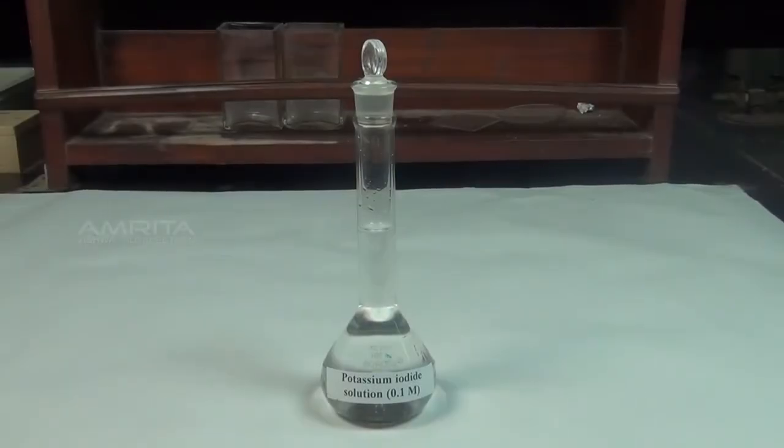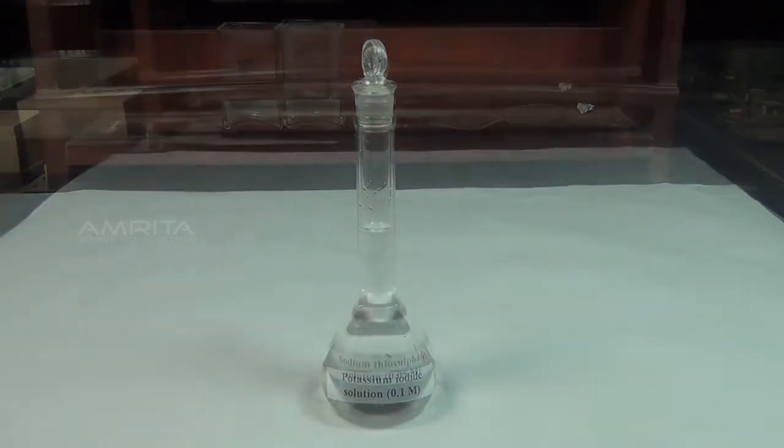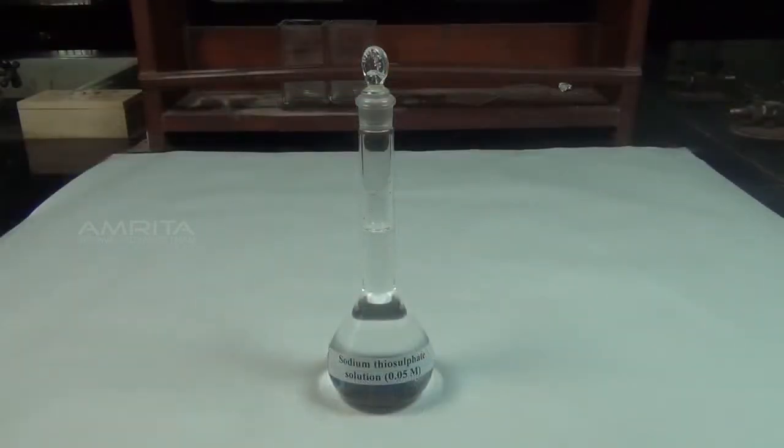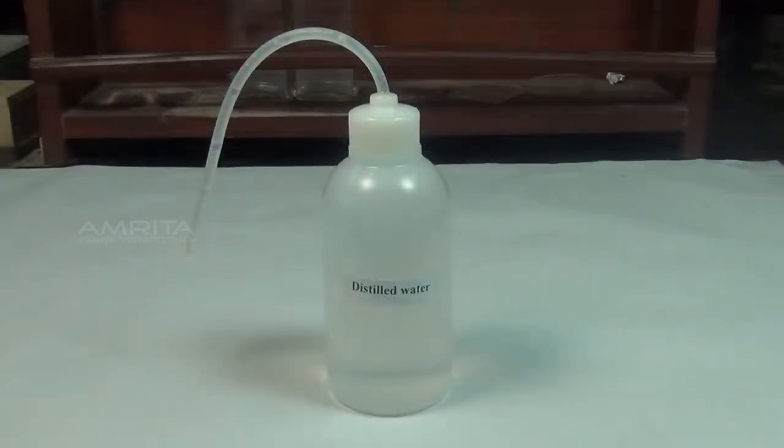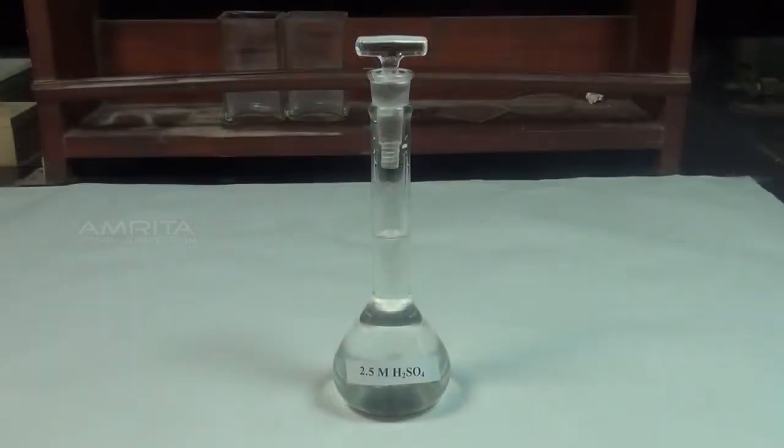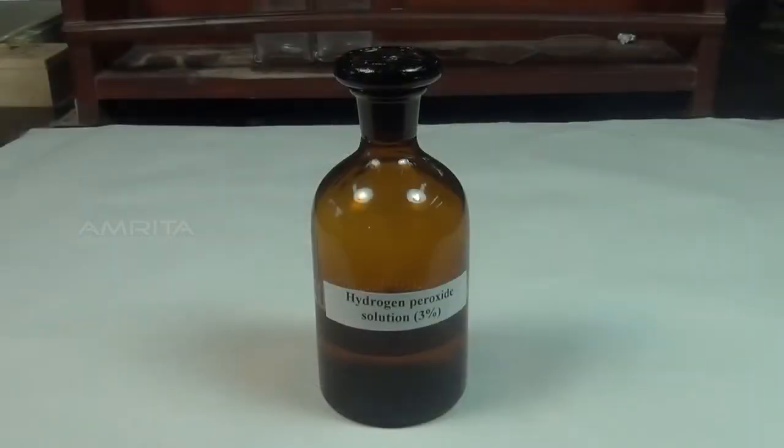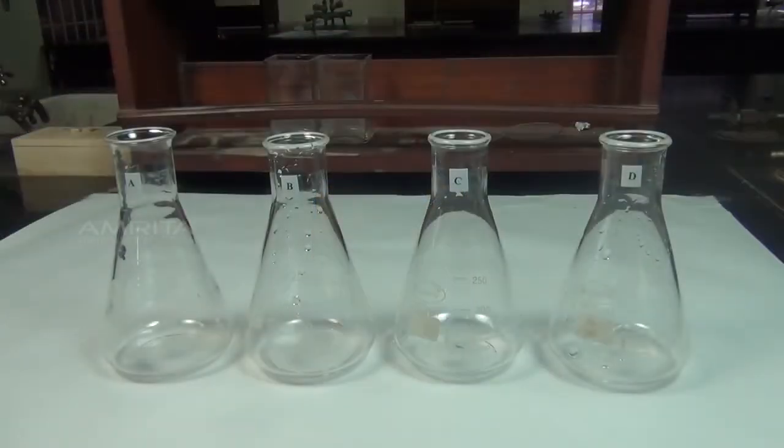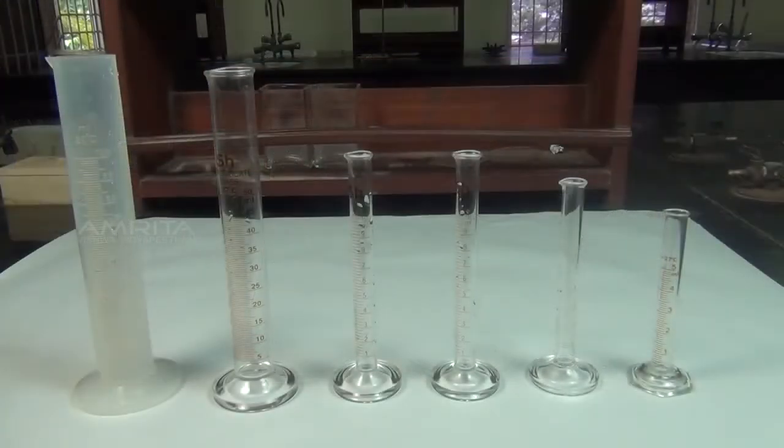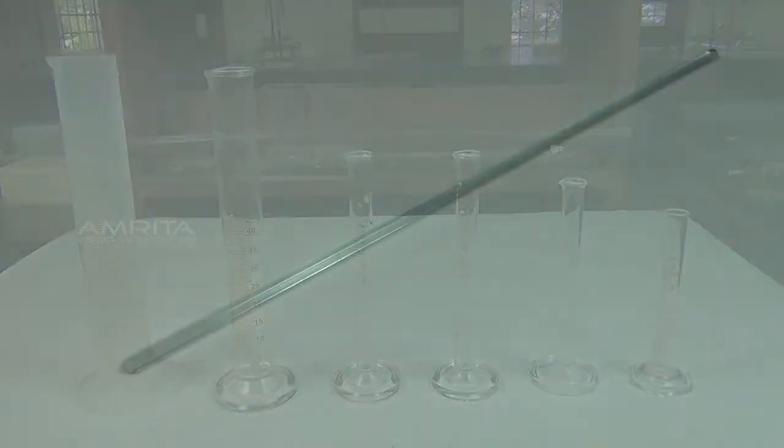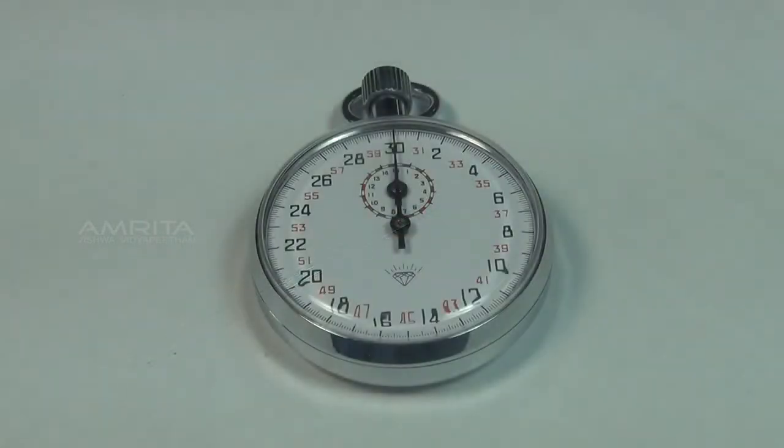Materials required: 0.1 molar potassium iodide solution, 0.05 molar sodium thiosulphate solution, distilled water, 2.5 molar sulphuric acid, starch solution, 3% hydrogen peroxide solution, conical flasks, measuring cylinders, glass rod, and stopwatch.